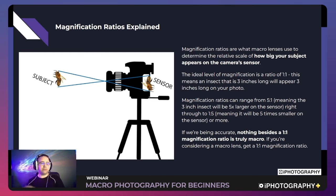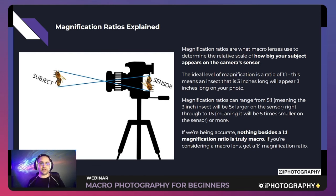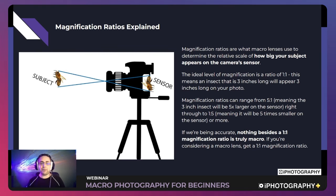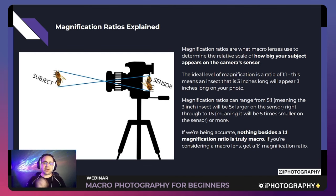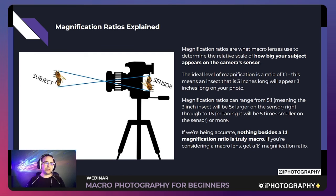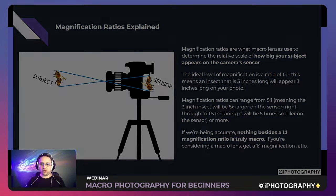Not all macro lenses are natively one-to-one magnification ratios, but there are ways to change that. If you want the most accurate image and best image quality, striving for a one-to-one magnification ratio is what we should be aiming for.